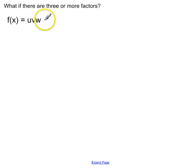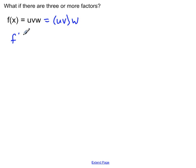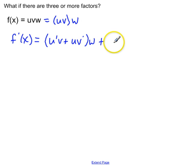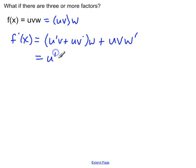What if there are three or more factors? Well, let's group the first two together and treat them as one factor. So now we're going to take the derivative of what's inside the parentheses times w. We do u prime v plus u v prime times w, plus what's inside the parentheses times the derivative of the second piece, w. And if I distribute the w, I get u prime v w plus u v prime w plus u v w prime.